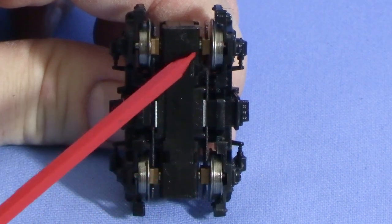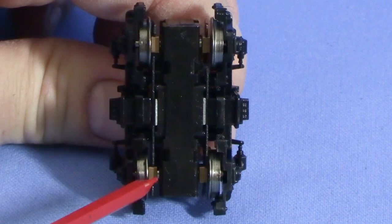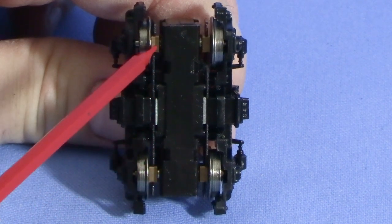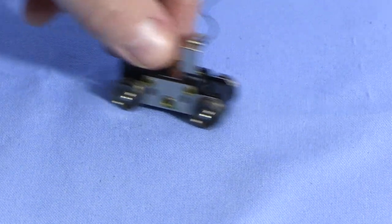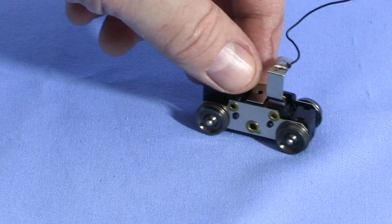The axle bearings hold the axles in place and are also part of the electrical path to get current from the track to the engine. On these trucks, the side frames are purely cosmetic. You can take them off and the truck will still function. It'll look weird, but it'll work.